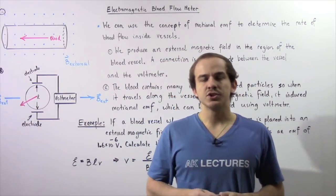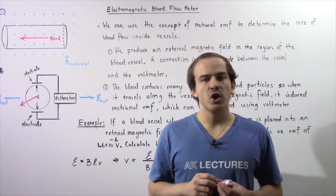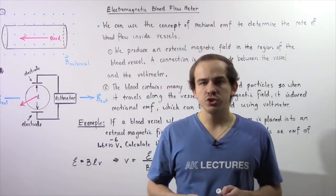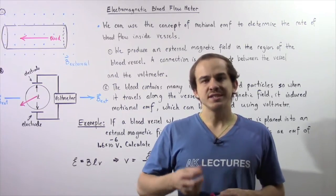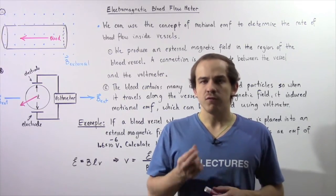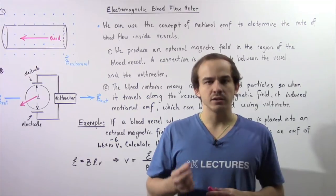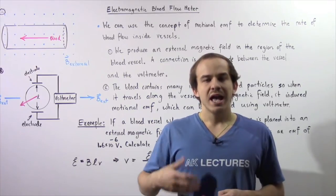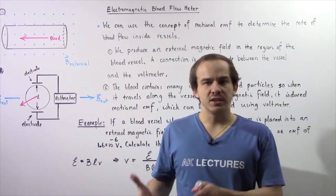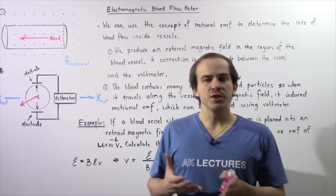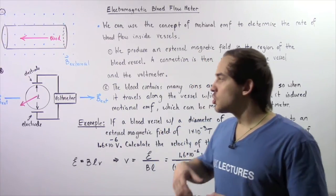In the past several lectures, we discussed the concept known as Motional EMF, which is essentially the voltage difference induced inside a conducting wire as a result of a moving conductor within an external magnetic field.